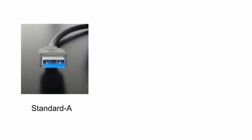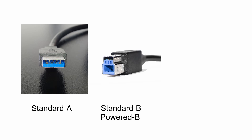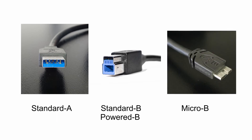The USB 3.0 specification provides for four types of connectors: Standard A, Standard B, Powered B, and Micro B. Standard B and Powered B connectors are virtually identical. The USB 3.0 Vision standard requires the use of jack screws on the connector for mechanical reliability. However, consumer-grade USB 3.0 cables without jack screws will work, though they are not built to the higher standards required by the USB 3.0 Vision specification and may limit the performance of the data transfer.